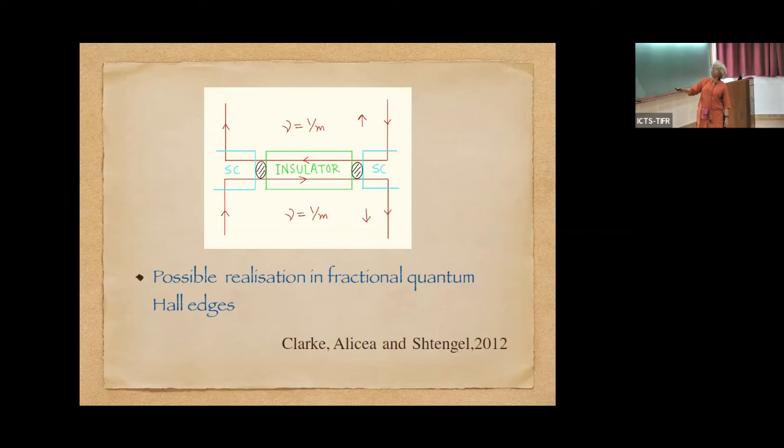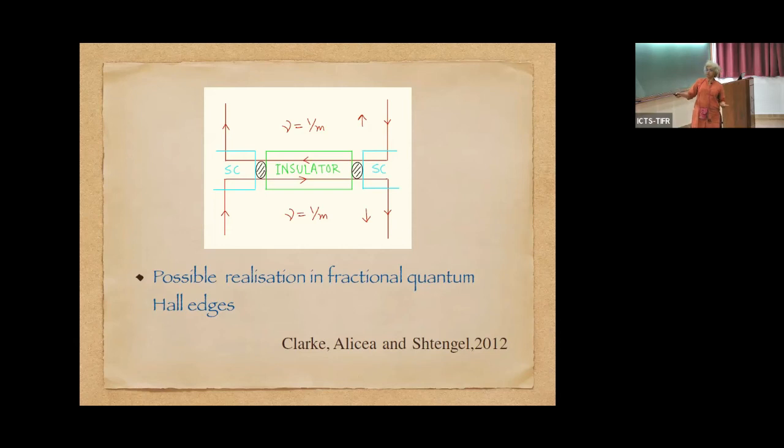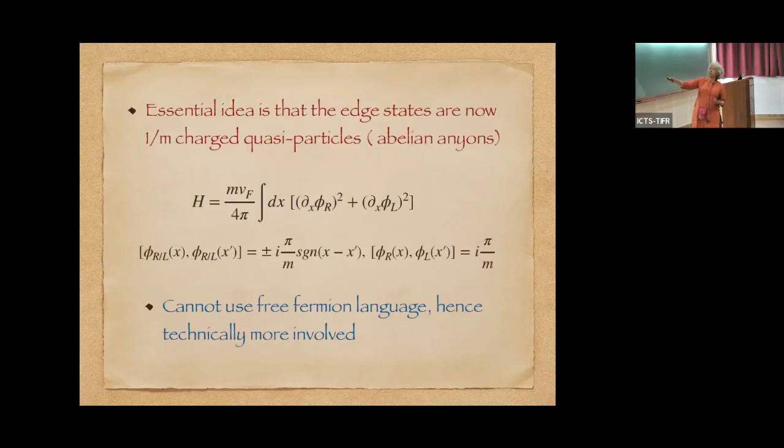And people have shown that it is possible to realize parafermions in a fractional quantum Hall scenario. If you have a fractional quantum Hall with spin up and spin down, which can be again arranged by having opposite g factors for these two materials, then it is possible to kind of trap parafermion modes between the superconductors and insulators. And the essential idea is that unlike for Majoranas, here even the simplest building blocks turn out to be abelian anyons, charged particles. So you can't use fermion language anymore. You need to use bosonization. So it's technically much more involved, but there are ways to study it.